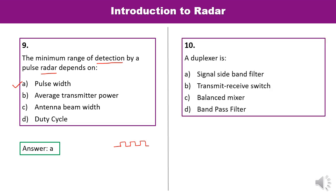Question 10: A duplexer is? When a single antenna is used for both transmission and reception, the duplexer acts as a transmit-receive switch. So B is the correct answer — the transmit-receive switch.